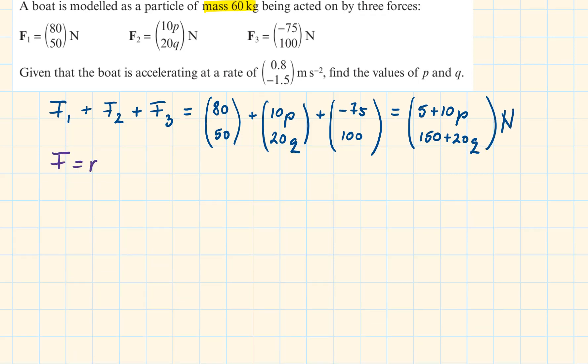Writing out our formula F equals MA. Replacing the F, we will have 5 plus 10P, 150 plus 20Q equals. Replacing the M, we will have 60 times. And replacing the A, we will have 0.8 minus 1.5.